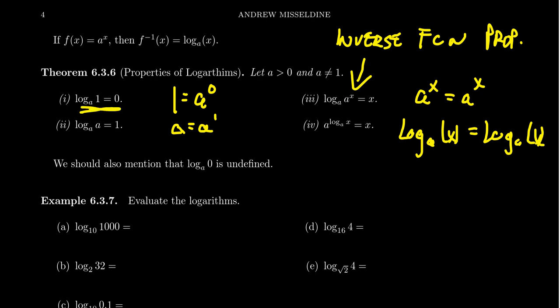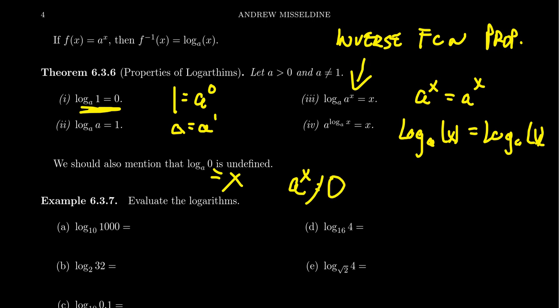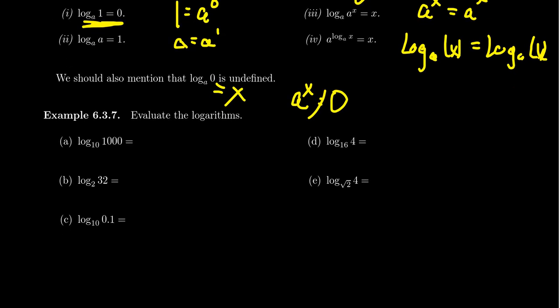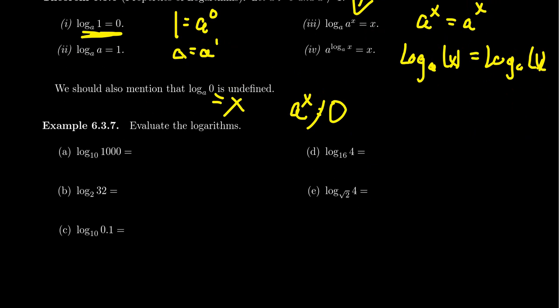One thing you have to caution yourself about: the log of 1 is always equal to 0, but the log of 0 is actually undefined. If this were equal to some number x, you could switch to an exponential statement and get a to the x equals 0. But this can't happen — exponentials never equal 0; that's where their horizontal asymptote is. Since 0 is outside the range of an exponential, 0 is outside the domain of a logarithm. Now, I want to show you how you can use property 3 to compute logarithms without a calculator: if you can write the argument as a power of the base, you can use that to compute the logarithm.